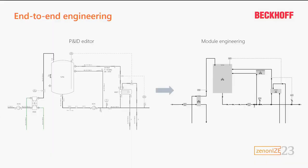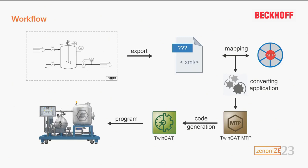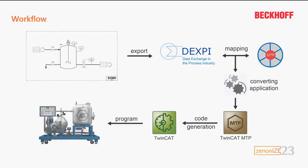We have defined the MTP as a standard interface between module engineering and the process orchestration layer. But what comes before the module engineering? We already have the P&ID of the physical module and want to integrate it into our module engineering without copy-pasting everything again. We need a standard at exactly this point. The idea is to use DEXP — export the P&ID as a file and map it onto the MTP standard, then convert it in WinCAT automation software, generate code for the module, and load it into the Xenon poll.